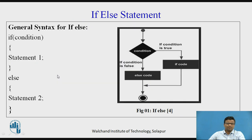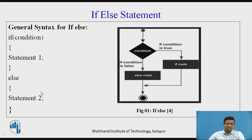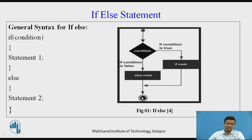What is meant by the if-else statement? The general syntax for if-else is as follows: if suppose you have a condition, for example x less than 0, and it is true, then statement 1 will be printed. Otherwise, the else statement will be printed. In the flowchart, if the condition is true, the if-code statement will be executed and the program exits; otherwise, if false, the else-code statement is printed and the program ends.